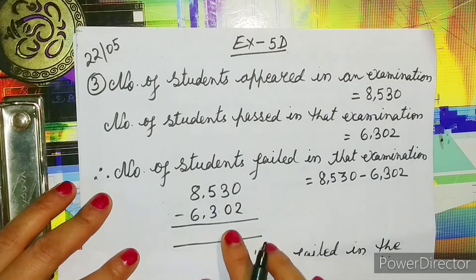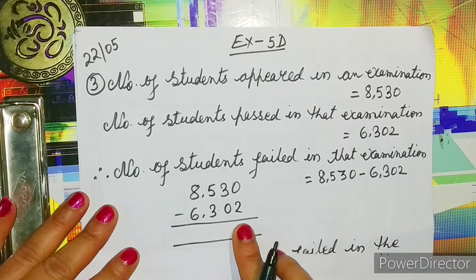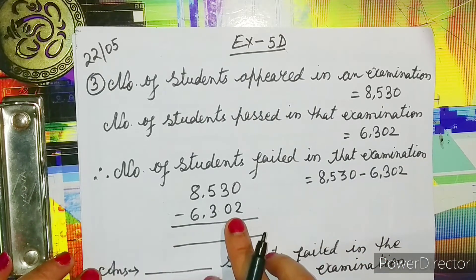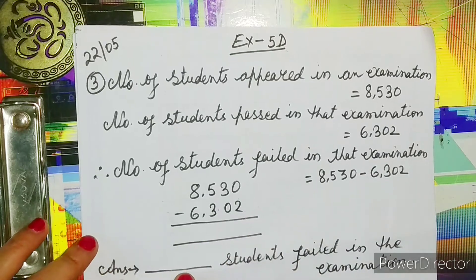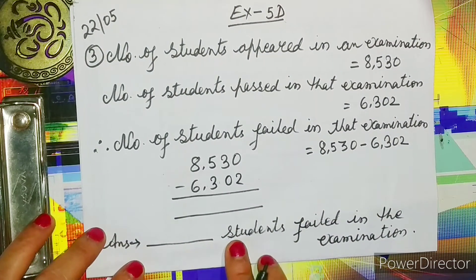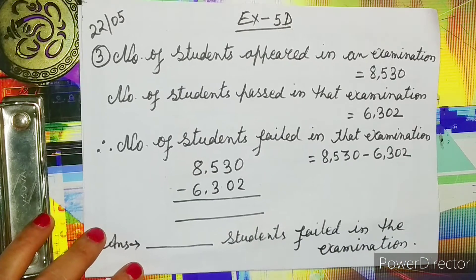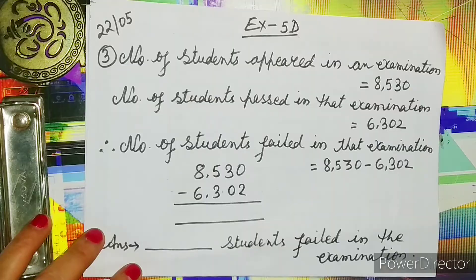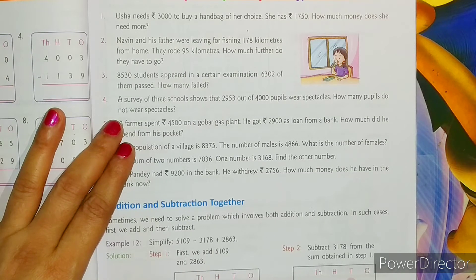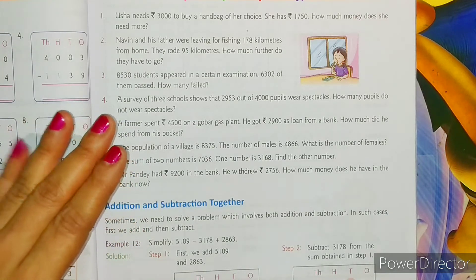Now let's do the calculation. You have to write the answer, and whatever answer comes, the same answer you have to fill in the blank space. While writing the answer, you will write: students failed in the examination. Dear students, I am making this video to help you. If you need any type of guidance, please suggest me through WhatsApp.